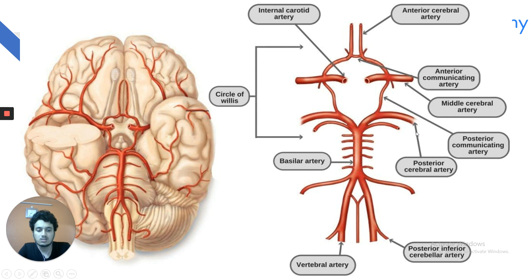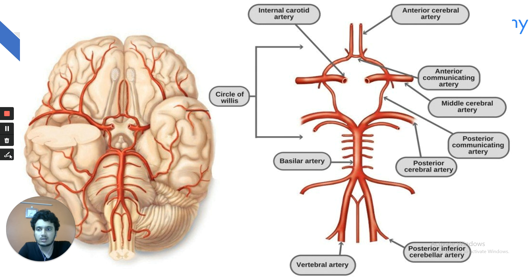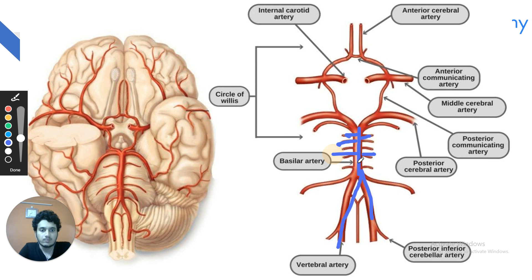In recent NEET exams, CT and MRI images of the brain were shown and parts needed to be identified. You must be aware of brain anatomy on CT and MRI — just studying anatomy diagrams is not sufficient. You also need to identify cadaveric images of vessels and nerves. The two vertebral arteries unite to form the basilar artery. Small branches from the basilar artery are the pontine branches. The posterior cerebral artery arises and communicates with the internal carotid artery via the posterior communicating artery.